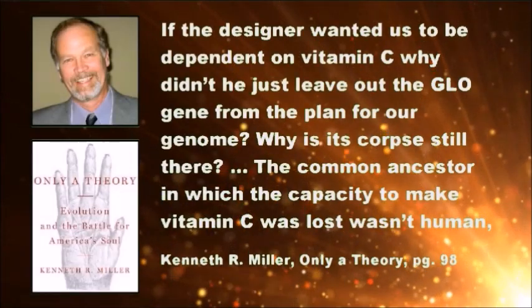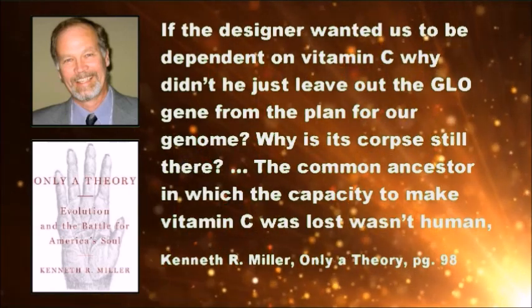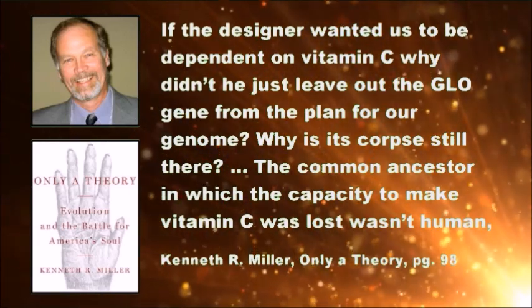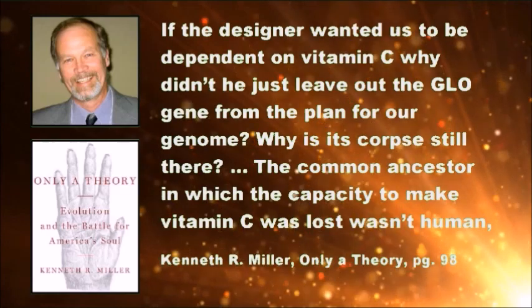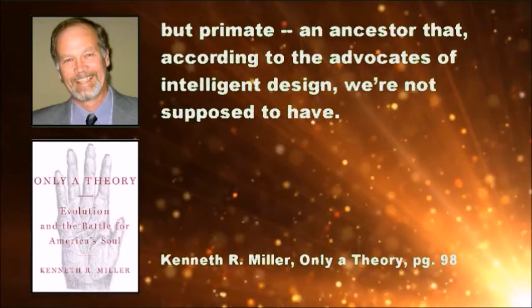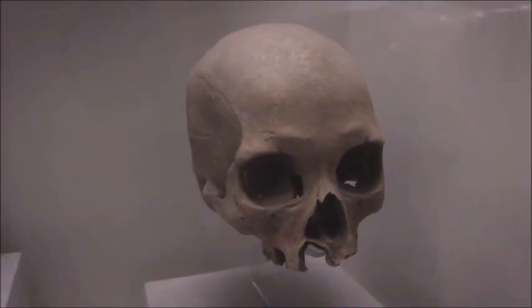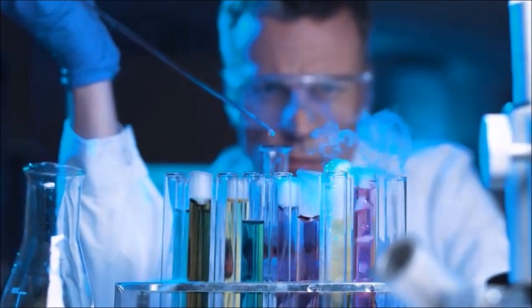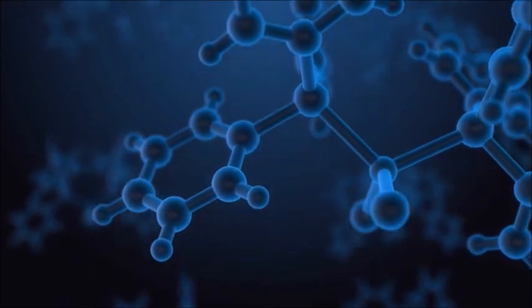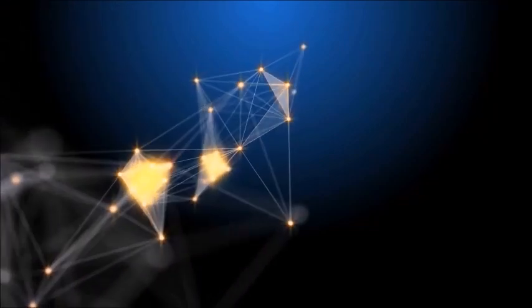Ken Miller uses this as an argument for evolution. He writes: If the designer wanted us to be dependent on vitamin C, why didn't he just leave out the GLO gene from the plan for our genome? Why is its corpse still there? The common ancestor in which the capacity to make vitamin C was lost wasn't human, but primate, an ancestor that, according to advocates of intelligent design, we're not supposed to have. Although Miller is guilty of assuming that intelligent design requires one to abandon the theory of common ancestry, the basic point he's making is that since both chimps and humans have the same broken gene, it is likely that the gene broke in a primate common ancestor, who then passed it on to modern humans. This is certainly a possible interpretation of the data, but it is not the only one.